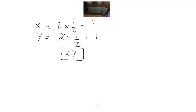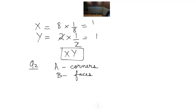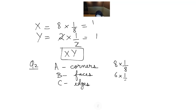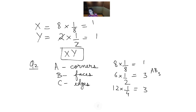Next question: A atoms are present at corners, B atoms are present at faces, and C atoms are present at edges. A = 8×(1/8) = 1; B = 6×(1/2) = 3; C = 12×(1/4) = 3. So the formula of the compound is AB₃C₃.